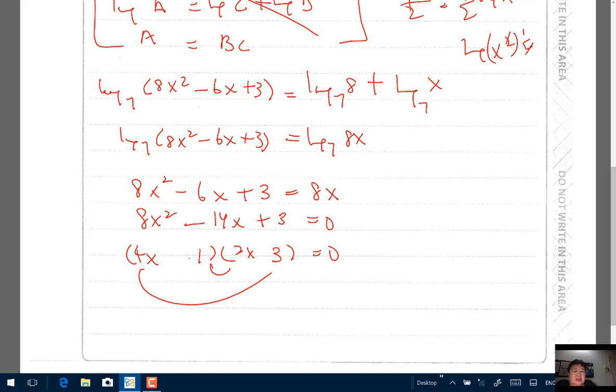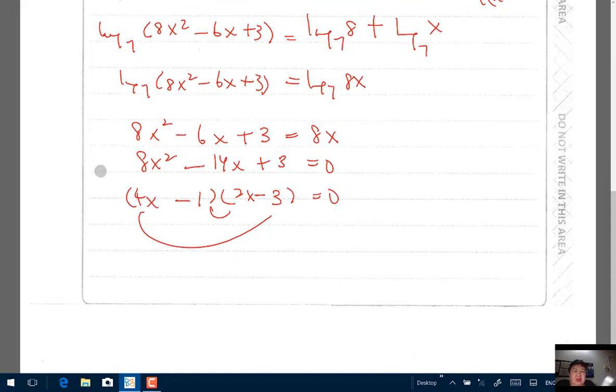But because it's negative, I'll take a negative 1 and a negative 3. So minus 2x plus minus 12x will give you that negative 14x. Quick check. Therefore, when you factorize it completely, you have 4x minus 1 bracket times bracket 2x minus 3 equals 0.